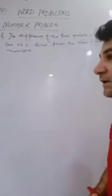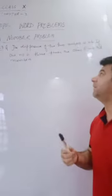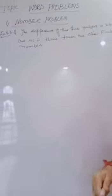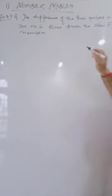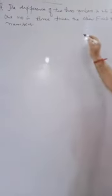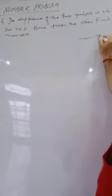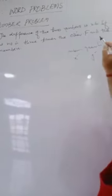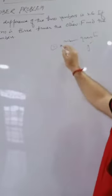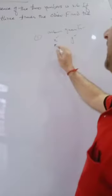To solve the number word problems, there are a few things and steps you have to follow. The first step is to represent the unknown quantities by two variables — suppose X and Y. Unknown quantities you have to represent by X and Y.